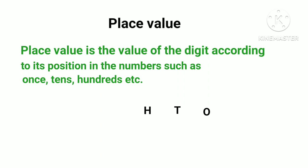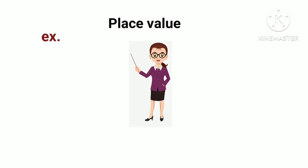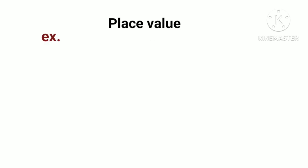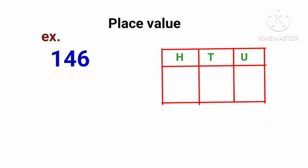So let's see the example. I will take one number: 146. If I write it in HTU columns, so I write 1 in the 100s column, 4 in the 10s column, and 6 in the units or 1s column. So H, T, and U — this is the place.